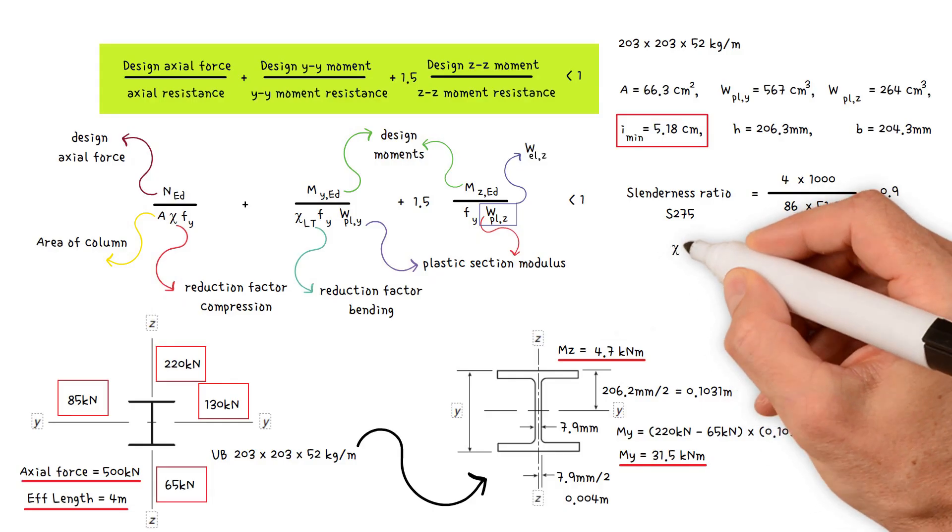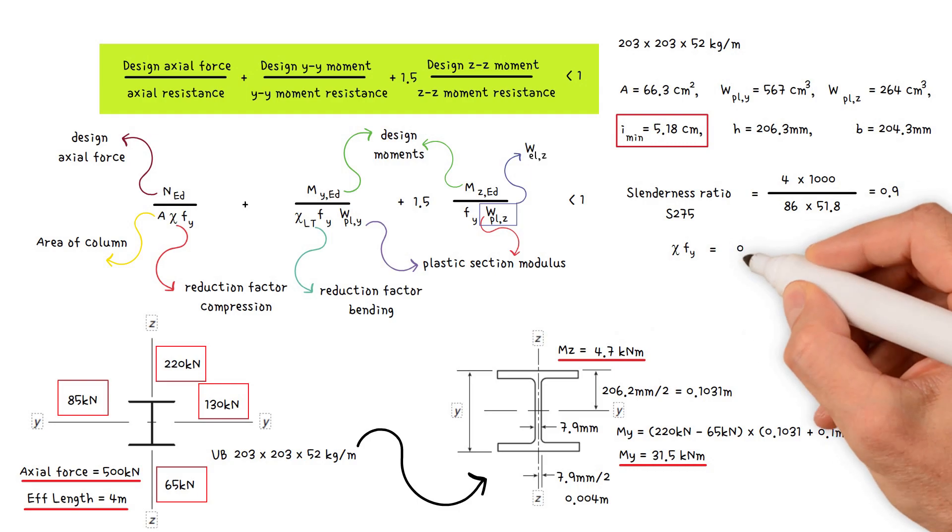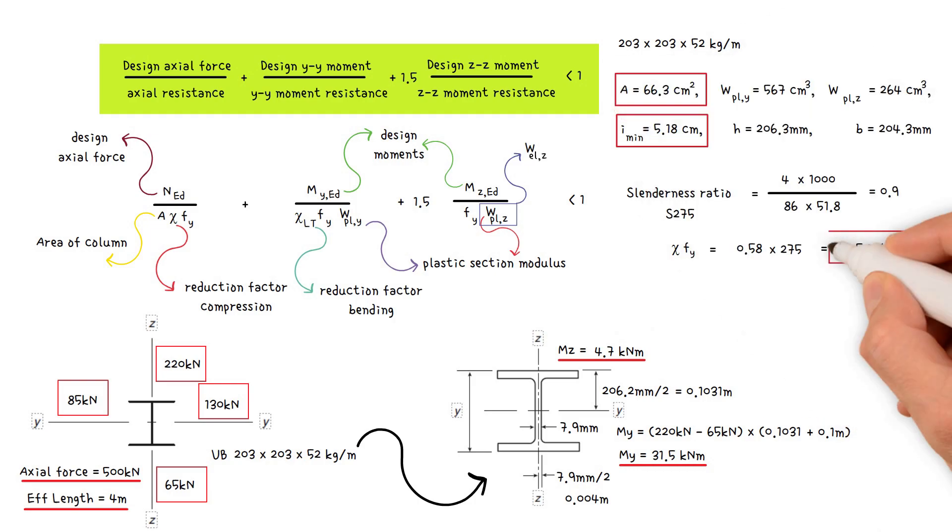As a result, buckling and bending stress equal 0.58 times yield strength 275 newton per millimeter squared. This gives us a value of 159.5 newton per millimeter squared. Therefore, area times buckling stress equals 1057.5 kilonewtons.